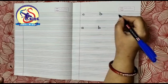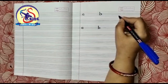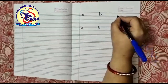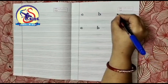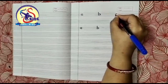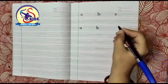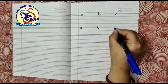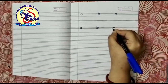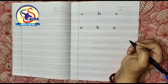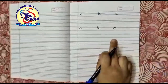Now let's write small c. Start from the middle and draw a curve till the bottom. Again start from the middle and draw a curve till the bottom. This is small c.